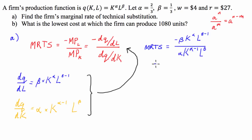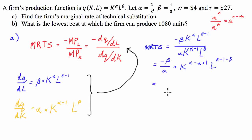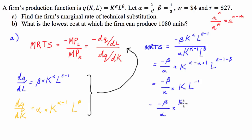Applying the index law, I keep negative beta over alpha out the front, then K to the alpha minus alpha plus 1 — because subtracting a negative gives a positive — multiplied by L to the beta minus 1 minus beta. This leaves me with negative beta divided by alpha, multiplied by K to the 1 and L to the negative 1, which simplifies to negative beta over alpha times K over L.